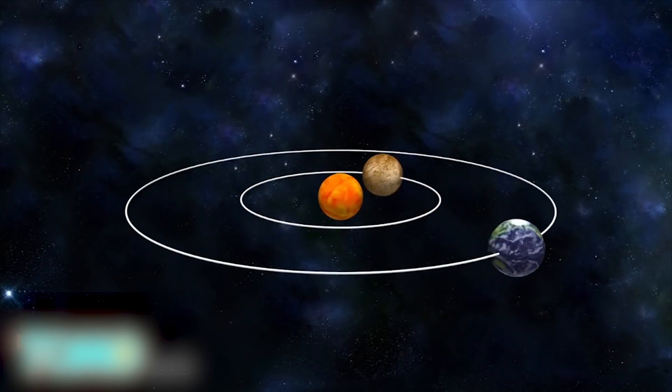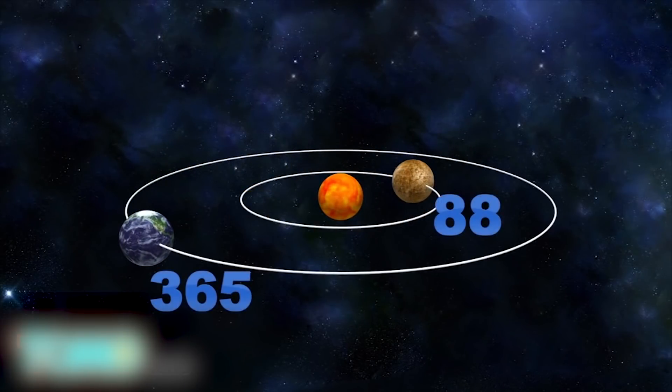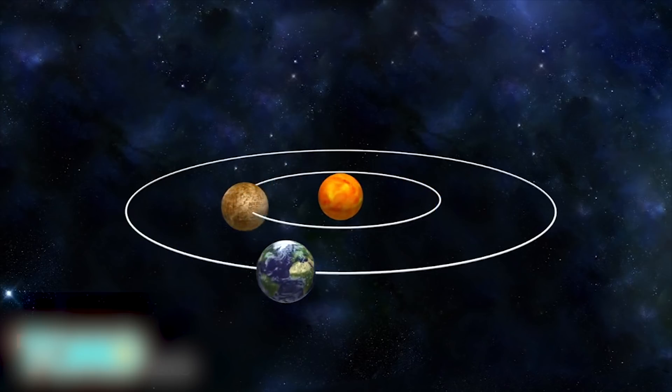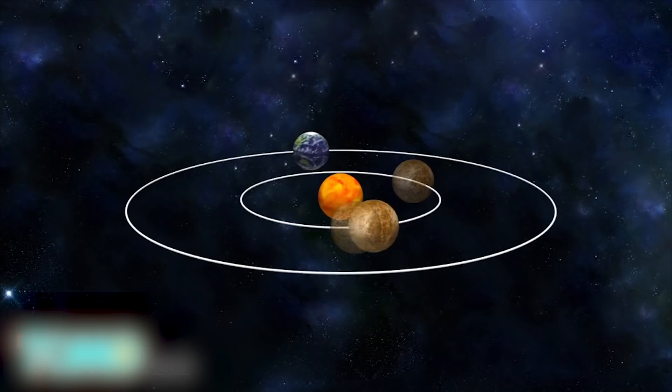While the Earth takes 365 days to orbit the sun, Mercury only takes 88 days to make the journey. Sky watchers worldwide will be able to witness part of this voyage on Monday. Mercury passes between Earth and the sun three times a year, about every four months.